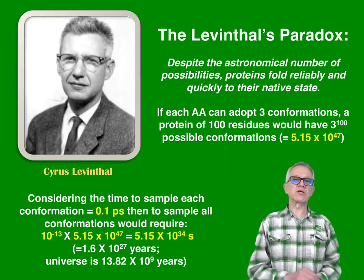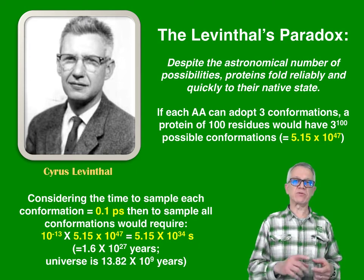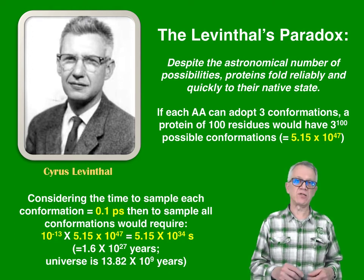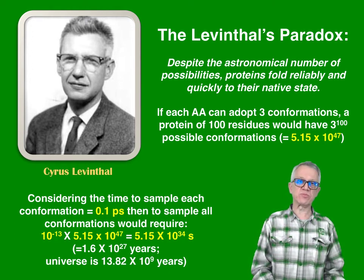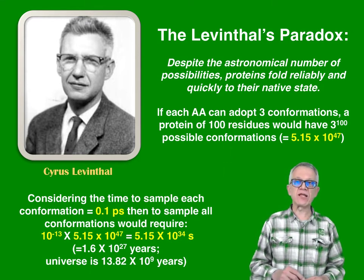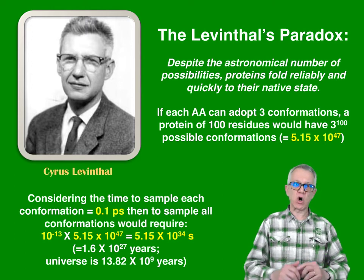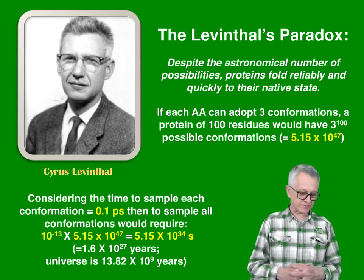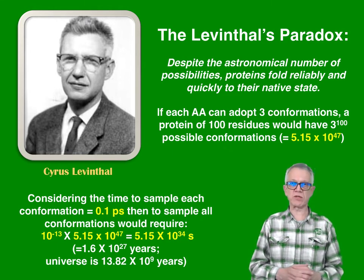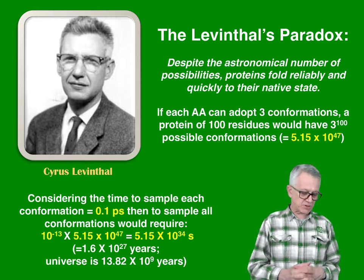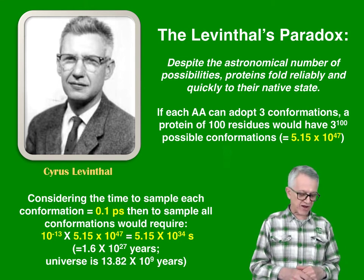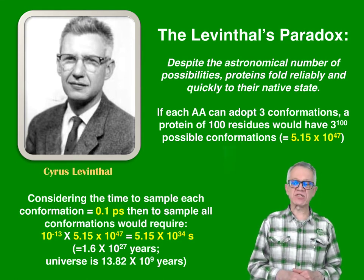He considered that if we take, for example, a time of 0.1 picoseconds — which is a very short period of time — for each conformation to be sampled, then the time needed to test all the different possibilities would be 10 to the power of negative 13 seconds (0.1 picoseconds) times 5.15 times 10 to the power of 47, which gives 5.15 times 10 to the power of 35 seconds.